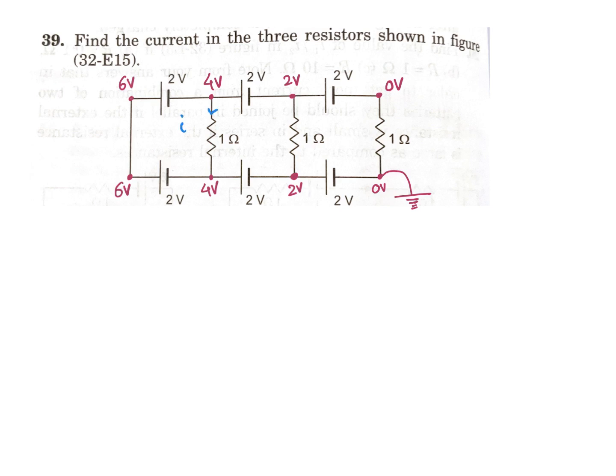So this current is zero, and the second is also zero, and then the third one is also zero. So current is zero in all branches. It needs no working at all, just mark one point.